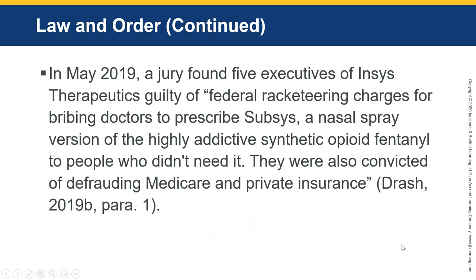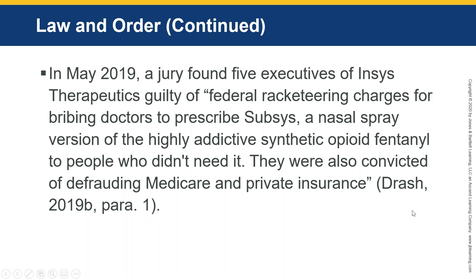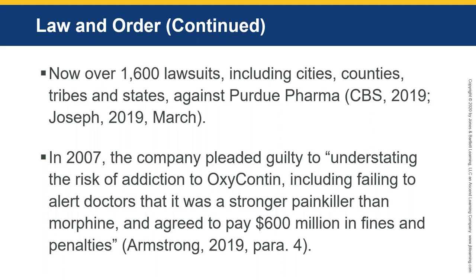In May 2019, a jury found five executives of Insys Therapeutics guilty of federal racketeering. They were charged with bribing doctors to prescribe Subsys — a nasal spray version of the highly addictive synthetic opioid fentanyl — to people who didn't need it, and were also convicted of defrauding Medicare and private insurance. There are now over 2,000 lawsuits including cities, counties, tribes, and states against Purdue Pharma, which recently discussed going into Chapter 11 to avoid liability. In 2007 the company pleaded guilty and agreed to pay $600 million in fines and penalties.